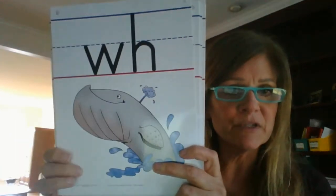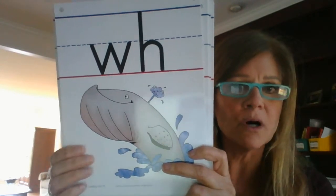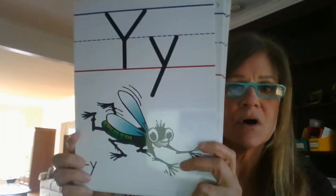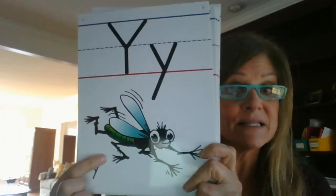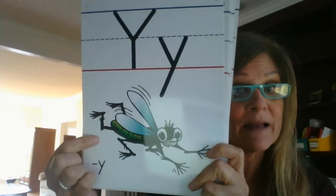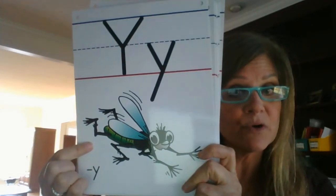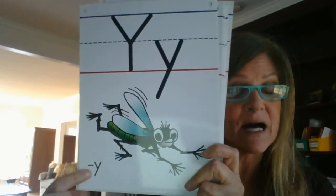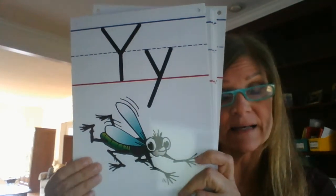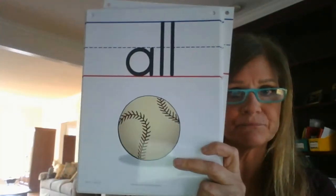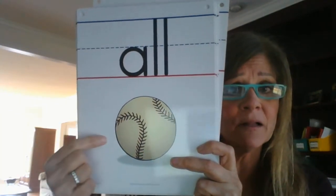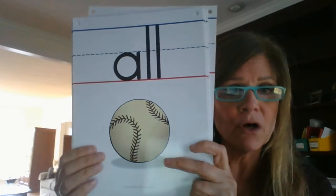W, H, Whale — W. Y as in fly — I, because Y at the end of some words makes the I sound, as in fly and sky. A, L, L, Ball — All.